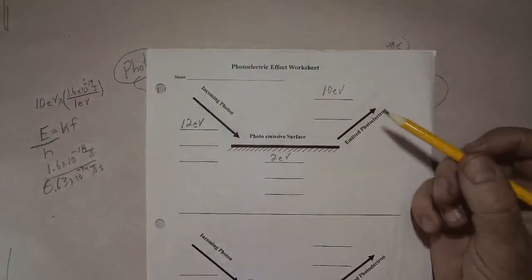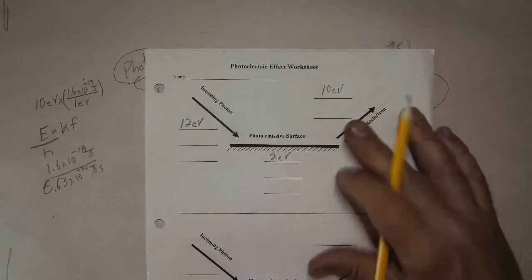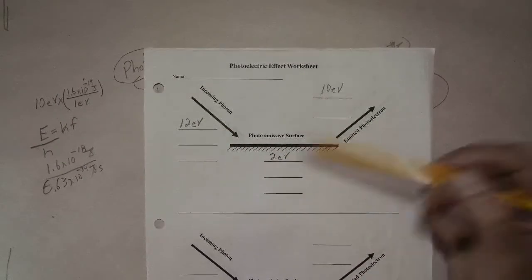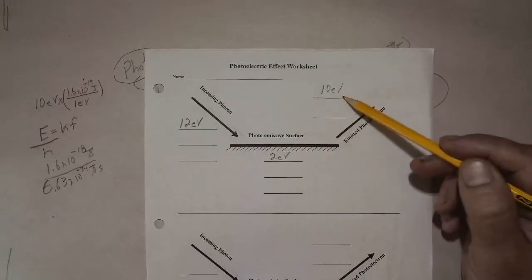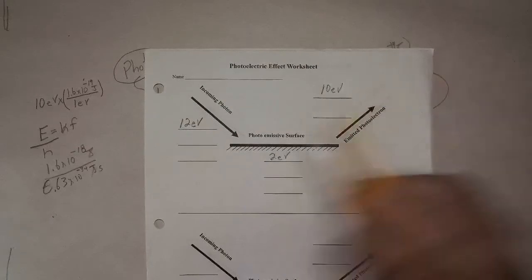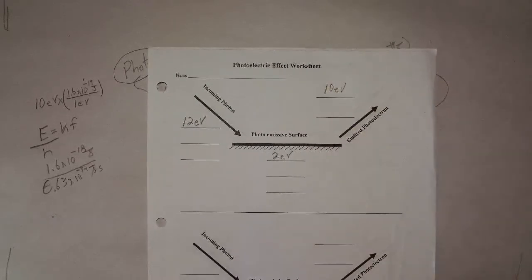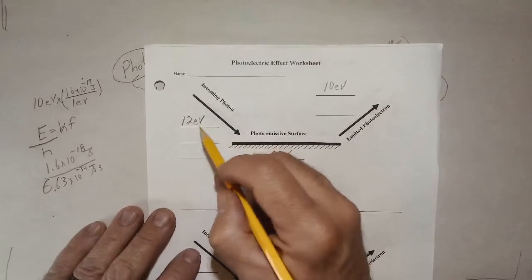All we have to do now, that's really the math, that's all there is to it. 12 eV, use up 2 for the work function, the emitted photoelectron has 10 electron volts left. That's all the math you have to do of substance. Everything else is just conversion.